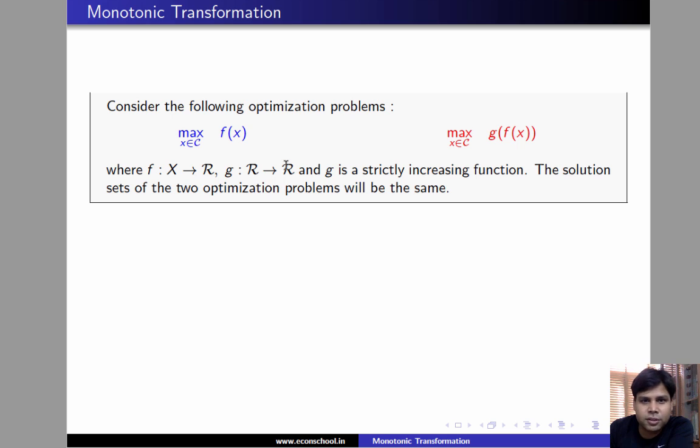To put it more formally, consider the following optimization problems. Maximize f(x) subject to picking an x from the constraint set C. Another problem is maximizing g(f(x)) where g is a strictly increasing function from R to R and we are making a choice from the same constraint set C. The theorem says that the solution sets of the two optimization problems will be the same.